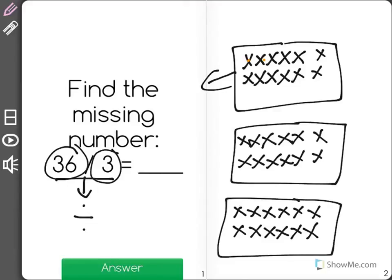You'll see that there are 1, 2, 3, 4, 5, 6, 7, 8, 9, 10, 11, 12 in each group. 12 is your missing number.